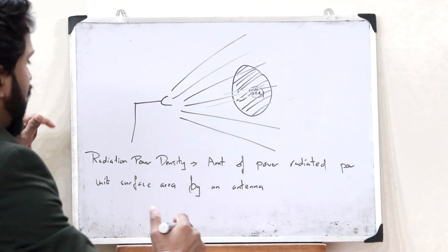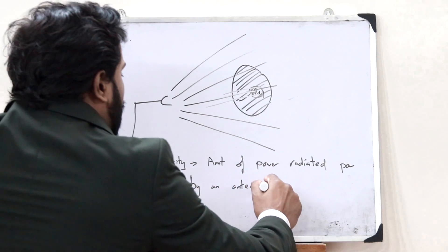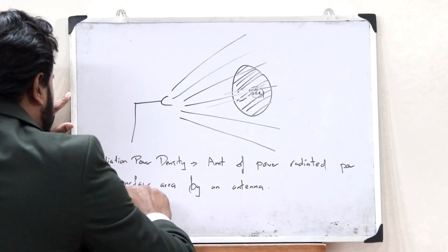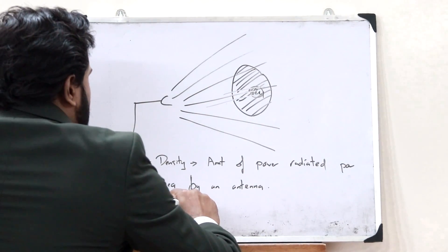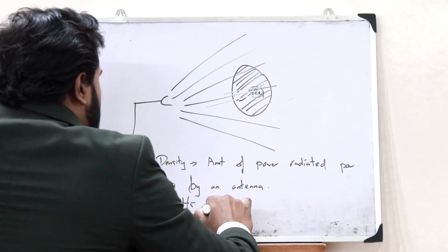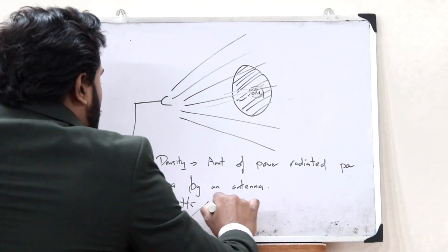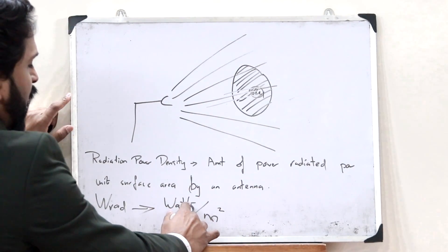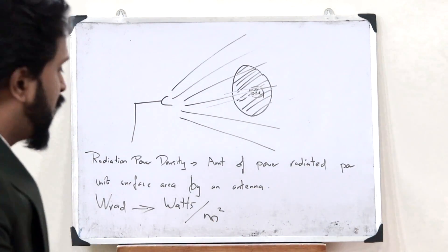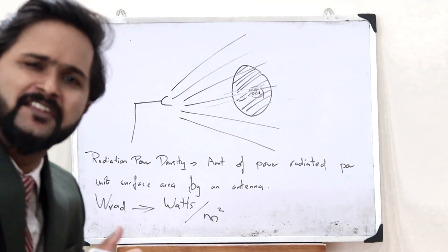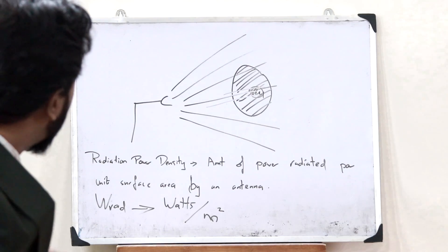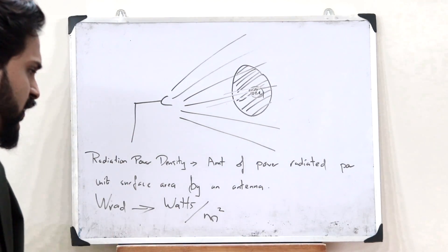Radiation power density is represented by the symbol W_rad, and the unit is watts per meter squared — where watts is the unit for power and meter squared is the unit for area. This is simply what you refer to as radiation power density.